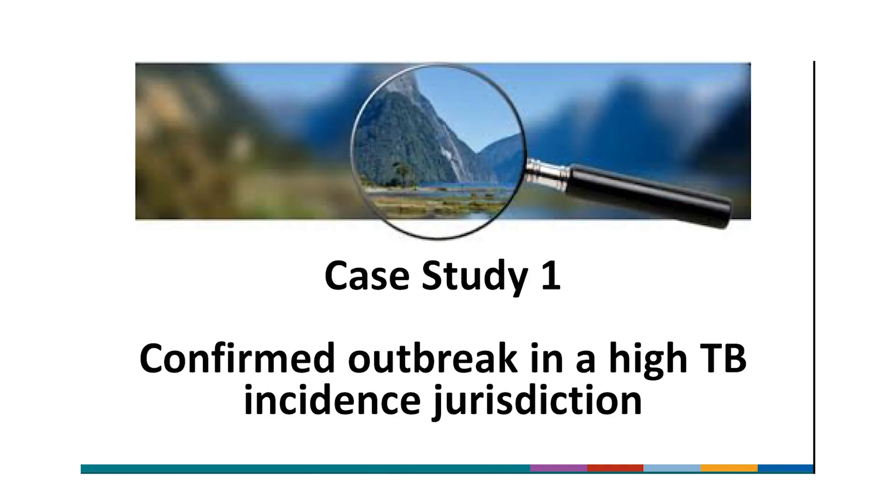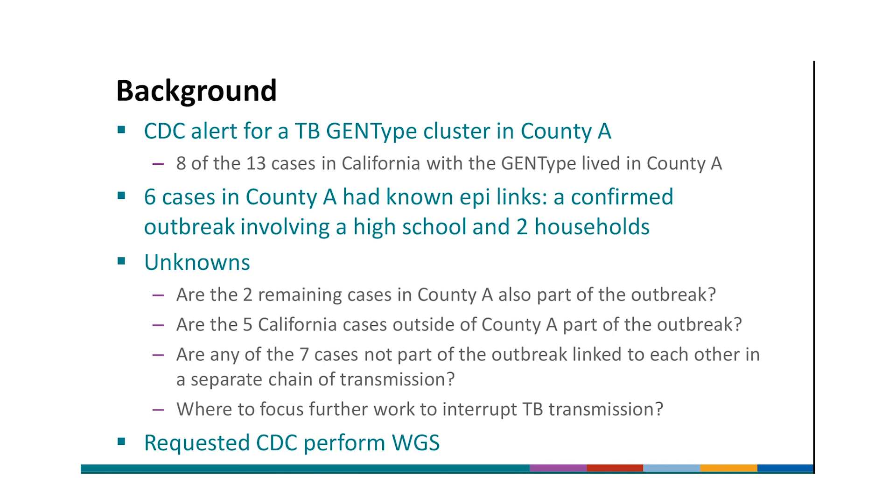So now I'll talk about case study one, confirming an outbreak in a high TB incidence jurisdiction. As background, we received a CDC TB genotype cluster alert for a genotype cluster in County A. When we examined this cluster more closely, we found that there were 13 California cases with the genotype, and eight of them lived in County A. The remaining five cases were scattered across four other counties. We notified County A about the CDC alert. They were already aware of six cases, six of these cases in their county that had known epi links. This was actually a confirmed outbreak involving a high school and two households.